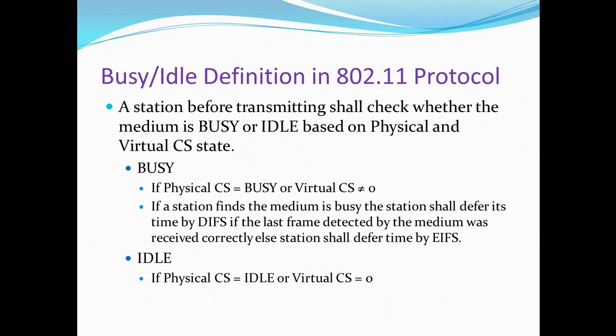How are busy and idle defined in the carrier sense mechanism? A station checks before transmitting whether the medium is busy or idle based on the physical and virtual CS state. If physical CS is busy or virtual CS is not equal to zero, the medium is certainly busy.